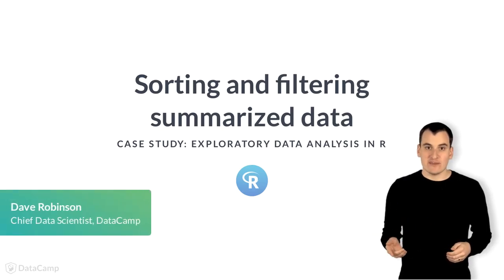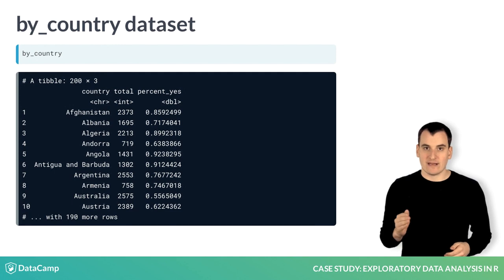In your last exercise, you created a dataset called By Country, containing one row for each country with the total number of votes and the percentage of votes that were yes.